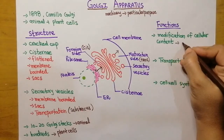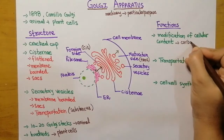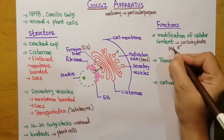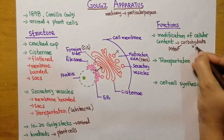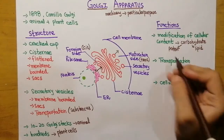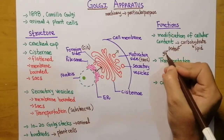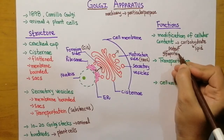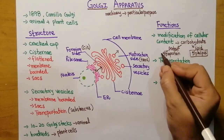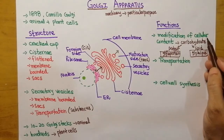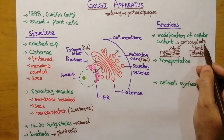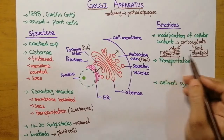What happens is that carbohydrates are added to the protein. Or if the cellular product is a lipid, carbohydrates are added to that as well. As a result, glycoprotein or glycolipid is formed — these are the modified products. The main products were protein and lipids, but when they enter the Golgi apparatus, due to the addition of carbohydrates they are modified into glycoprotein and glycolipid.